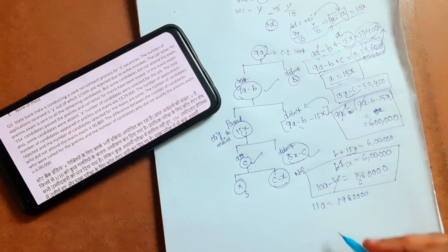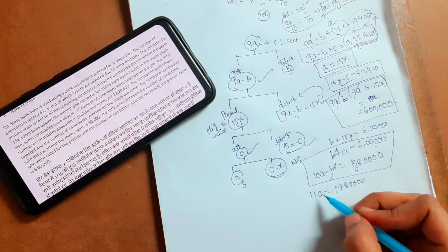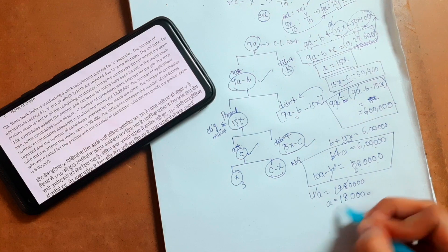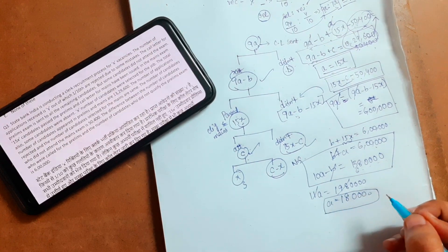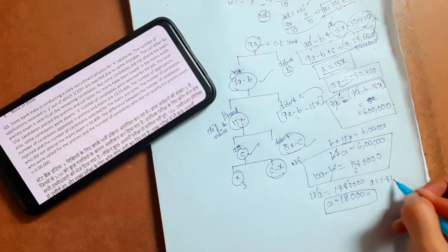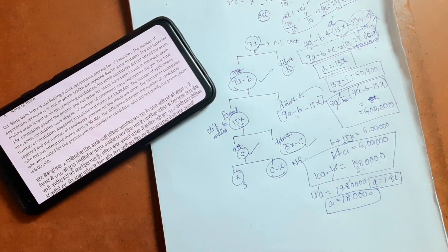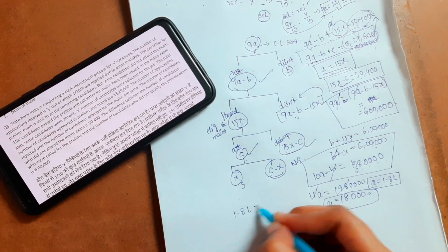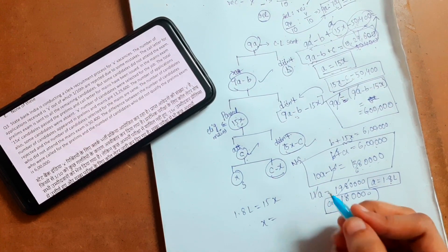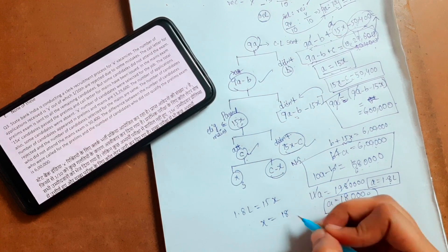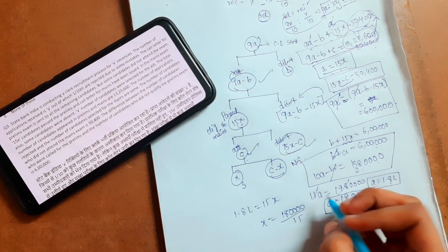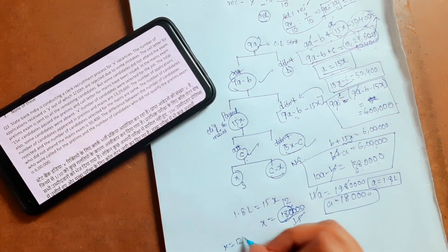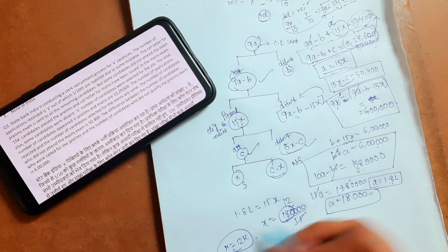After cancellation we get 11a equals 19,80,000. So 11 divides into 1,980 — 88 times divided by 11 — giving a = 1.8 lakh. If a = 1.8 lakh and a = 15x, then 1.8 lakh = 15x, so x = 1,80,000 divided by 15 = 12,000. So we have a = 1.8 lakh and x = 12,000.